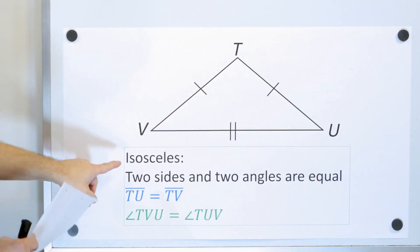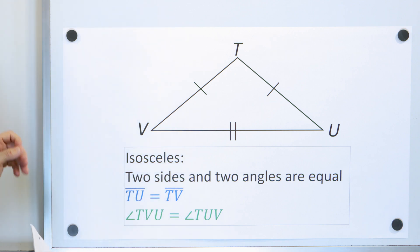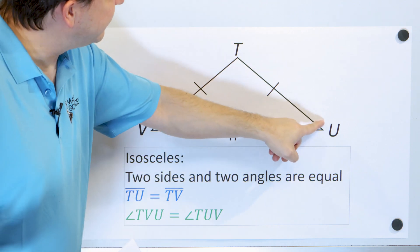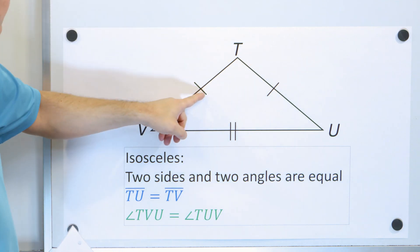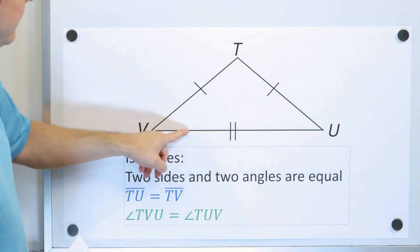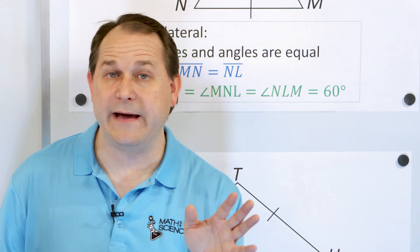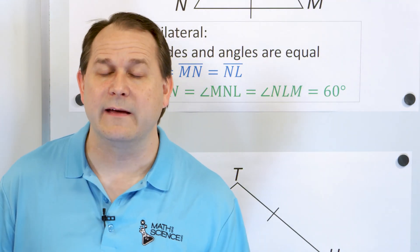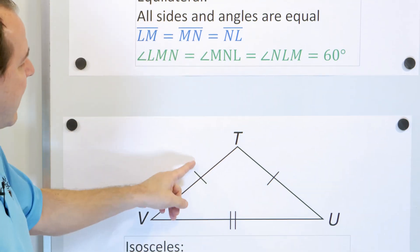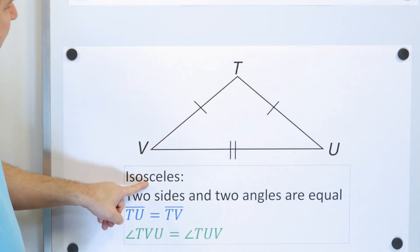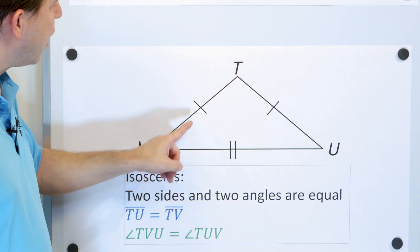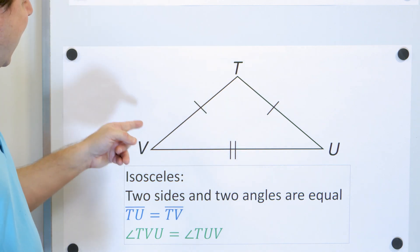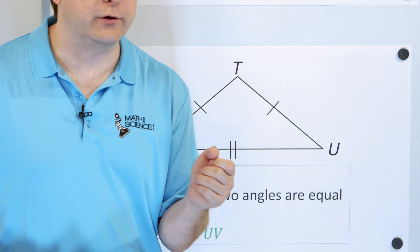Now we have another kind of triangle called an isosceles triangle. Isosceles means that two sides are congruent — the same length — but the base, or the third side of the triangle, is not the same length as the other two. So equilateral has all three equal; isosceles just means two sides are equal or congruent.